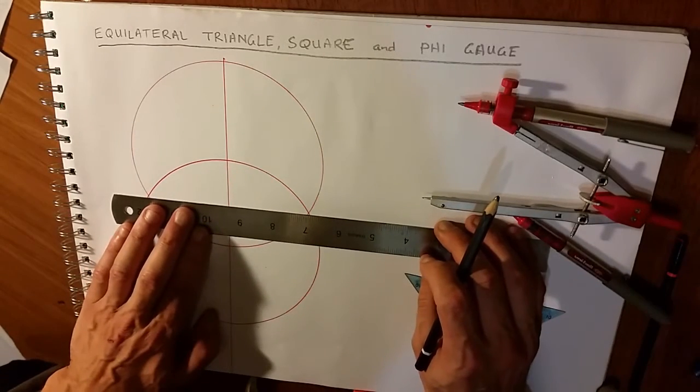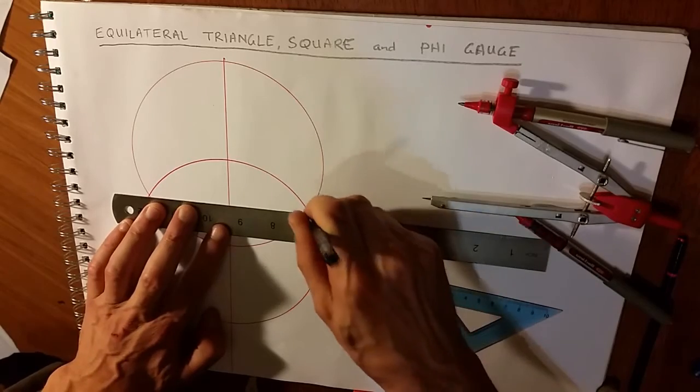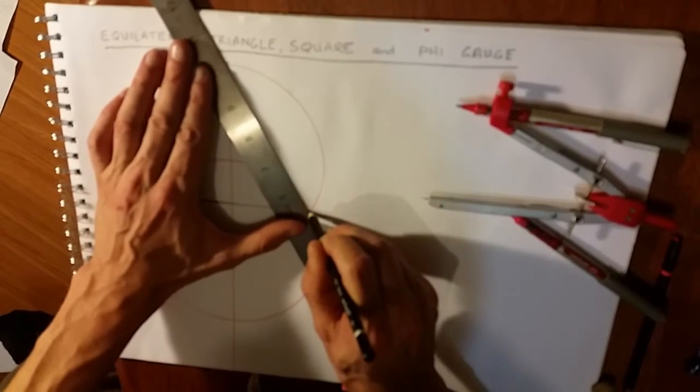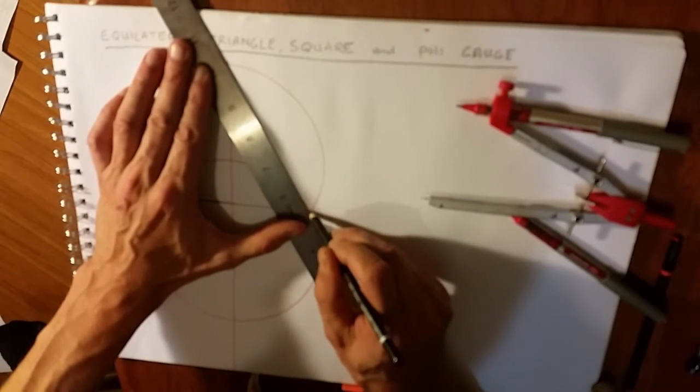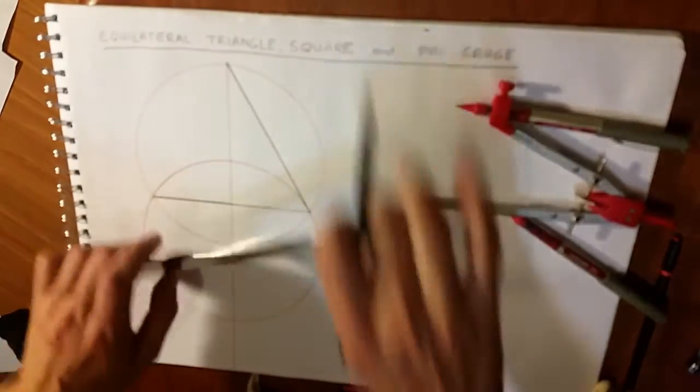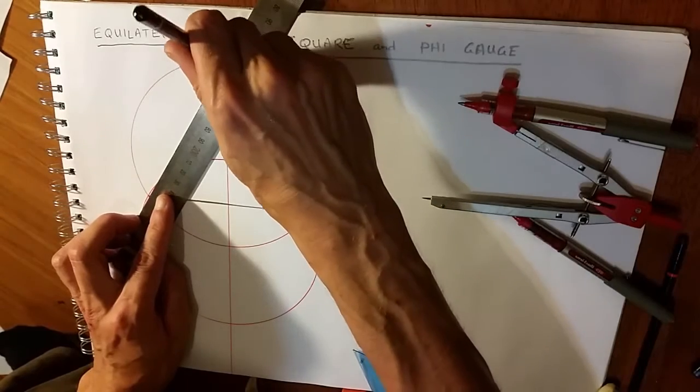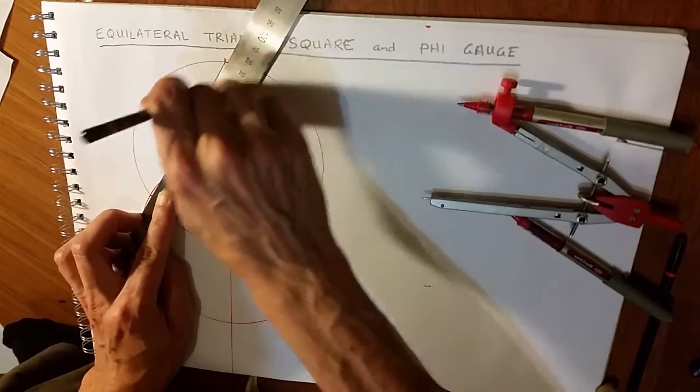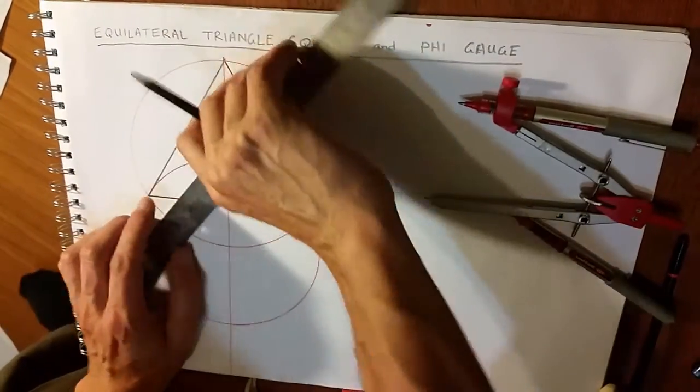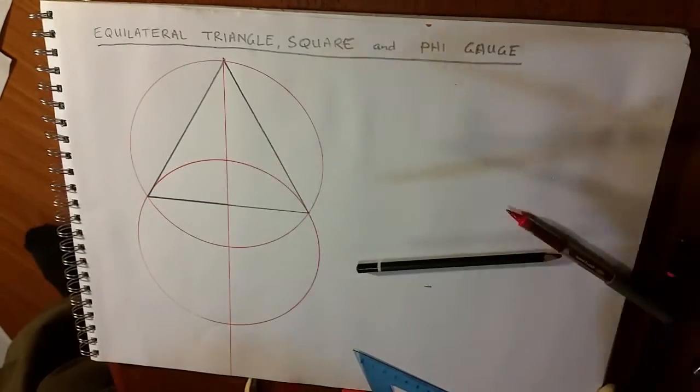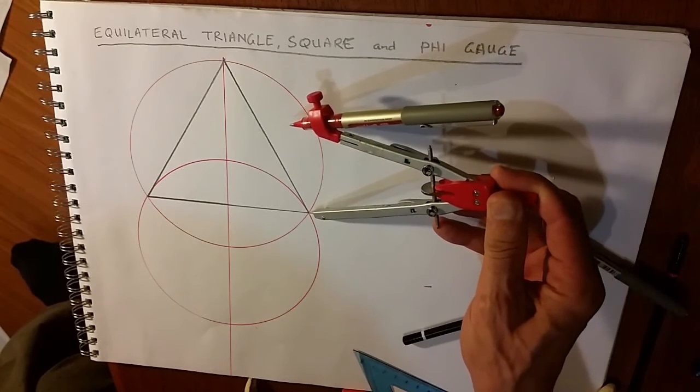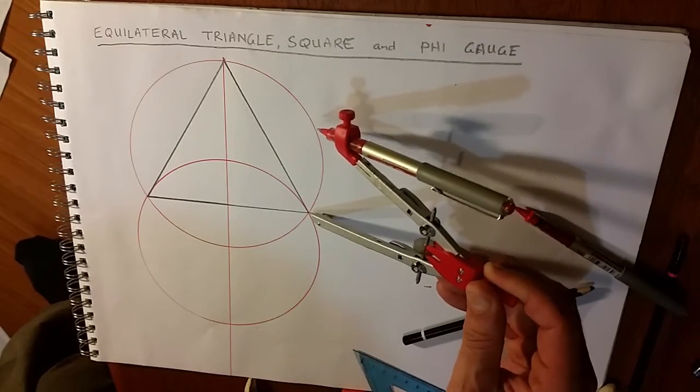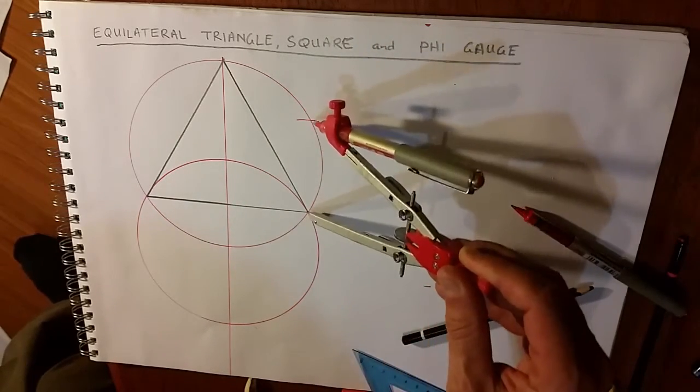Equilateral triangle. So there we have an equilateral triangle from the vesica piscis. We haven't changed the size of the compass. And now I'll create a mark with the...